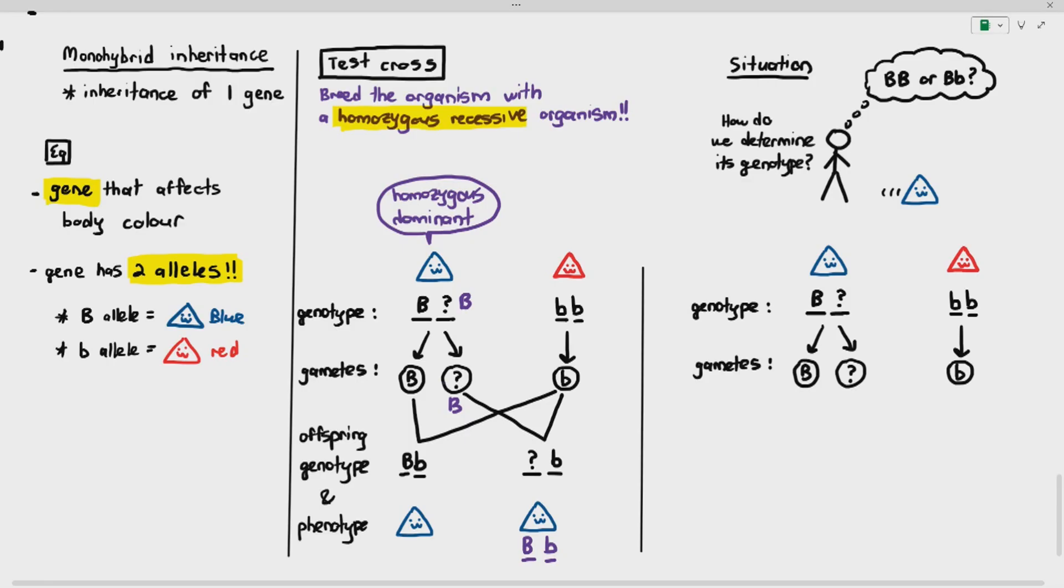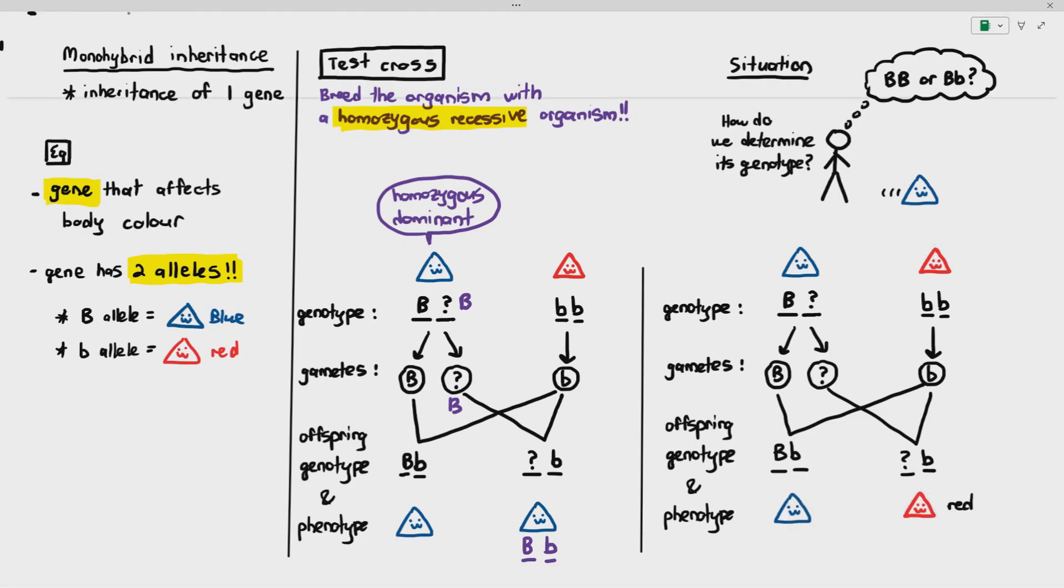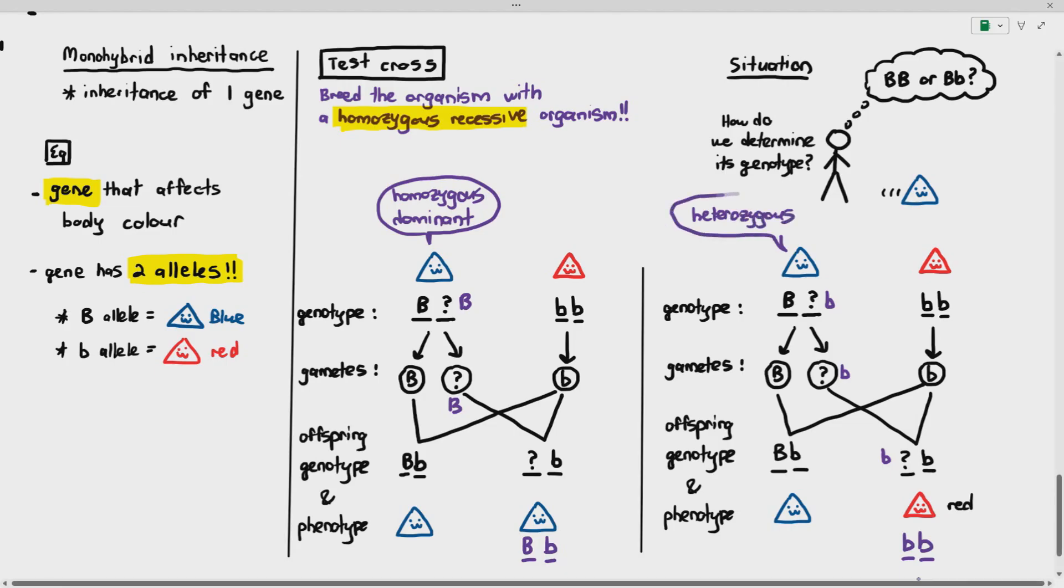But in the other possibility over here, if they cross together, large B, small b, that's fine. But in the unknown genotype over there for the offspring, it gets a red offspring. You know that the red offspring over here is small b, small b. So one of the alleles has to be small b over there at the question mark, which means to say the parent also provided one small b allele. So the parent in this case is heterozygous. That's the purpose of a test cross right here.